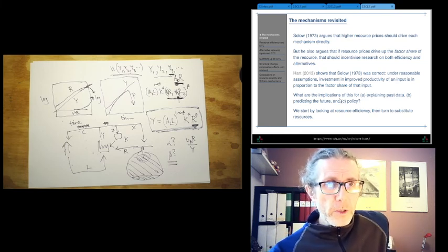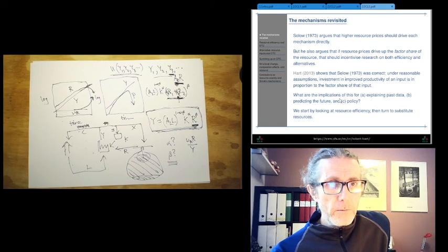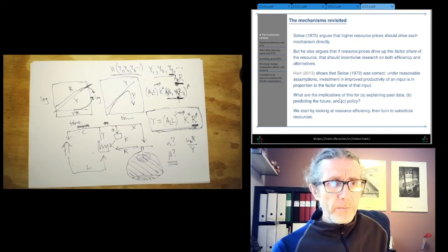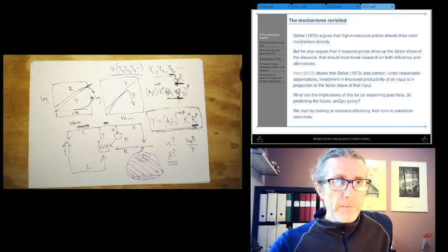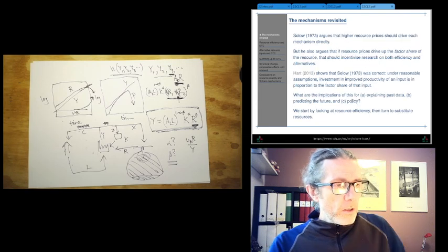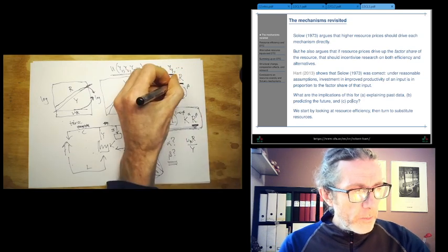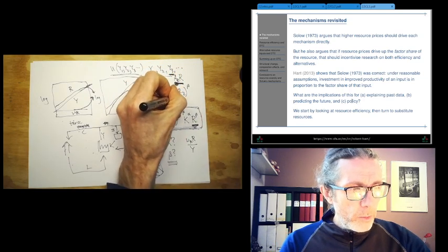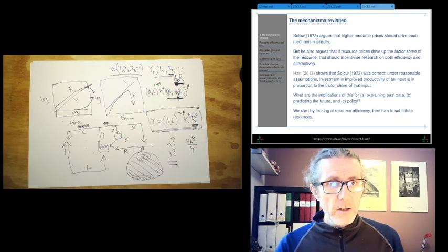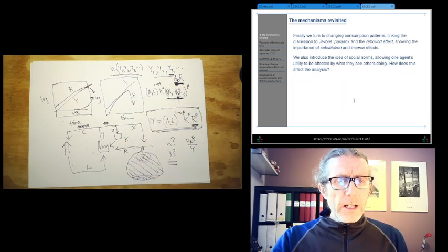And one of my papers from 2013 shows that Solow was right. Under reasonable assumptions, investment in improved productivity of an input is in proportion to the factor share of that input. But what are the implications of this? And that is crucial to these mechanisms, boosting AR and boosting A2, given the notation I've got here.